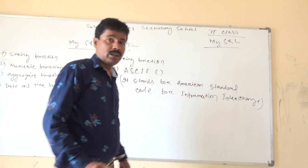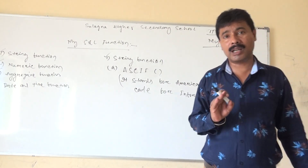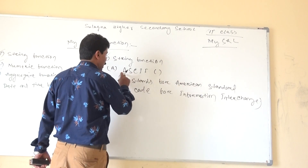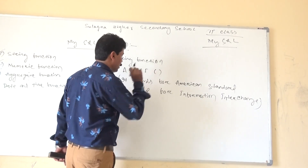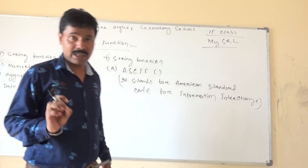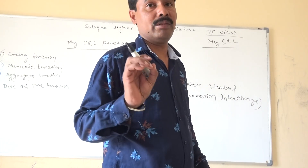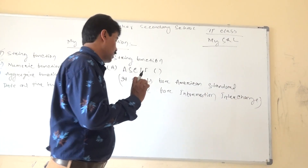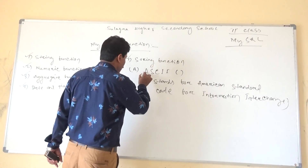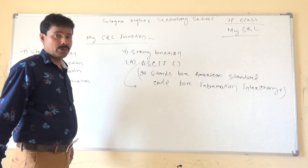First of all, the format is the purpose. The function is the return value function. Now let's look at the syntax and example. The ASCII function serves its purpose.